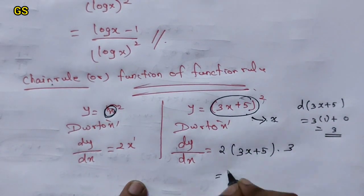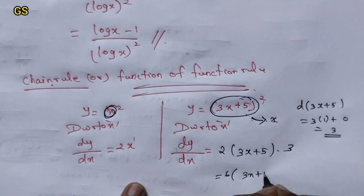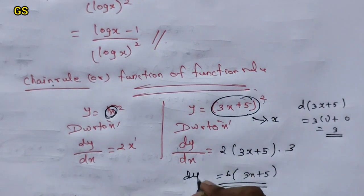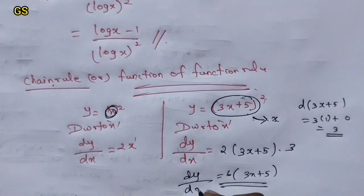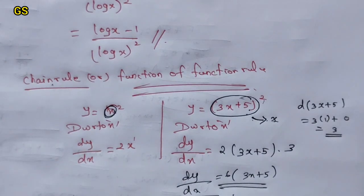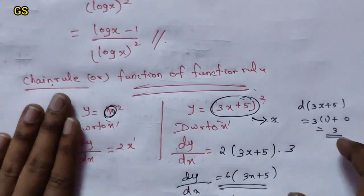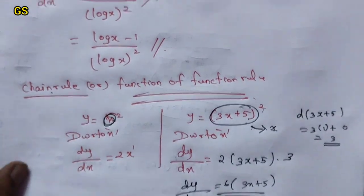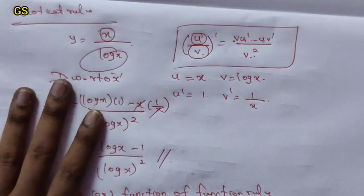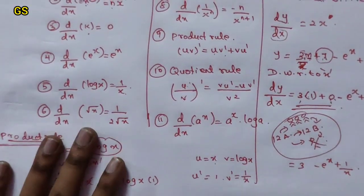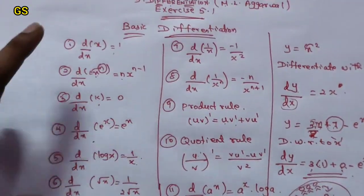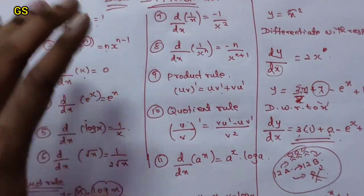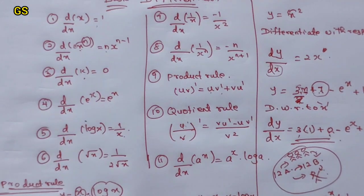So the answer is 6 into 3x plus 5. That is dy/dx. Do you understand? So this is the chain rule — function of function rule. We also covered the quotient rule, product rule, and the basic formulas as a sum. Thank you, bye.